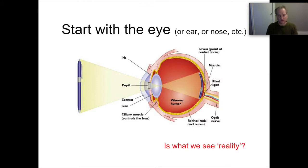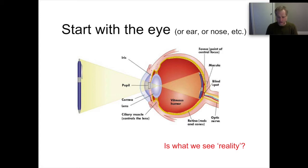A good place to start is with a sensory organ — here is an eyeball depicted on the screen. I could have chosen an ear, a nose, or skin receptors, but the point is that there is a very certain characteristic of a sensory organ and its interaction with the world. An object in the world is being imaged through an optical device — the cornea and the intraocular lens — onto the back of the eye, the retina, which is composed of different classes of photoreceptors. That's the beginning of our sensory processing.